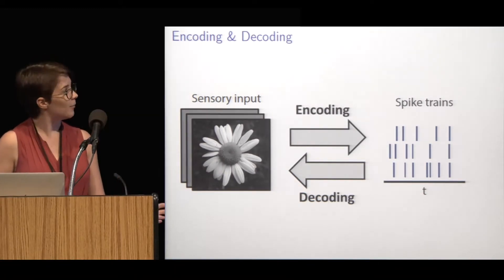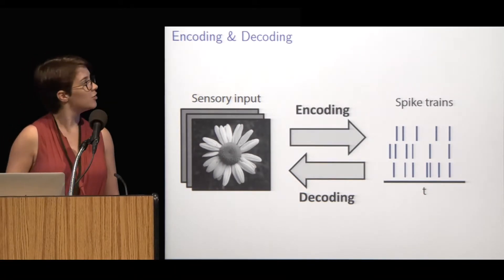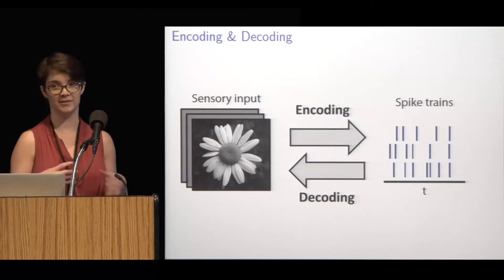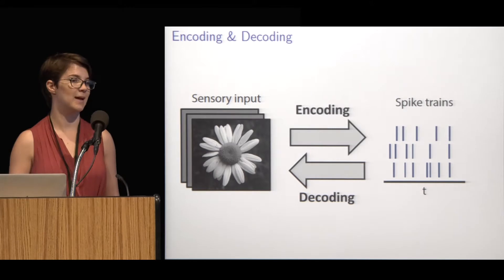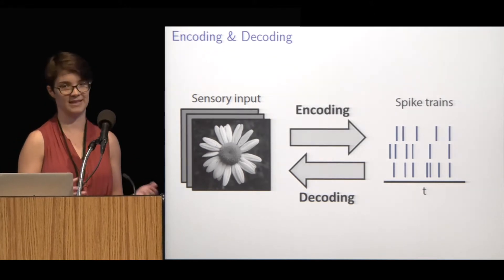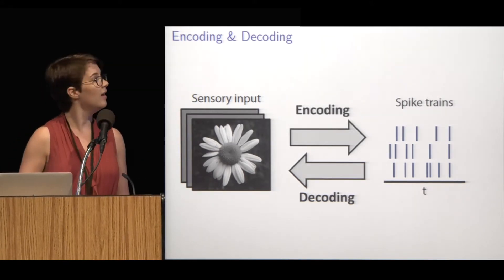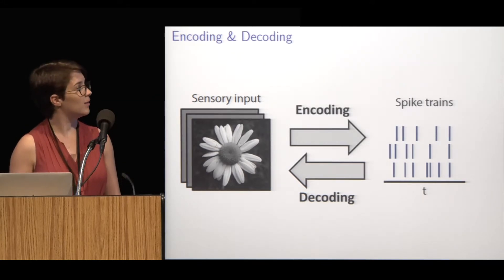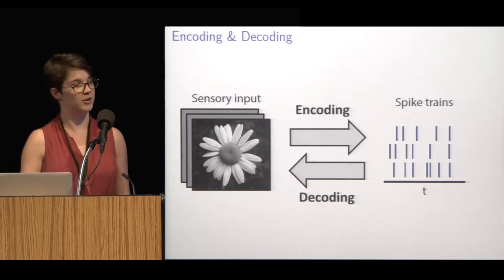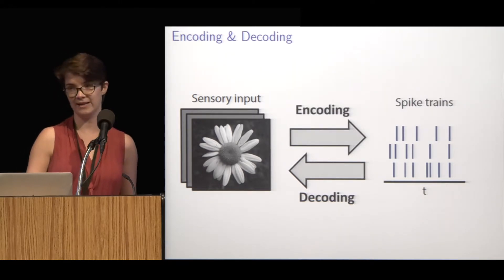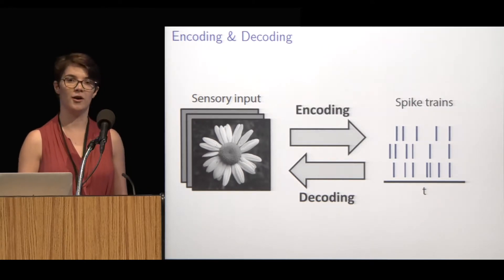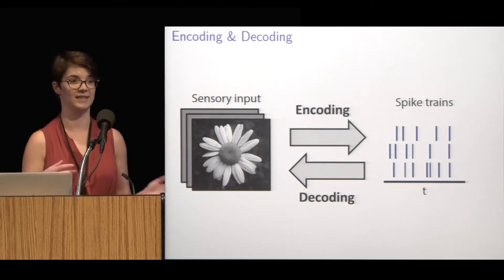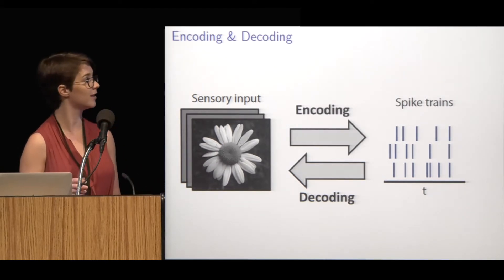We care about decoding for a couple of reasons. Decoding helps us understand what the informational content of spikes is, and we can examine what parts of the stimulus different cell types are encoding. I'll be talking about decoding in the retina, and here we especially care about good decoding models because it can help to assess retinal prosthetics — we can get a sense of the maximal visual restoration possible from the different patterns of activity elicited by the retinal prosthetic.